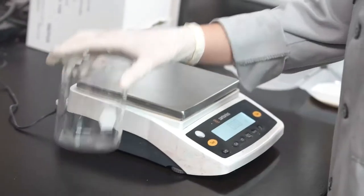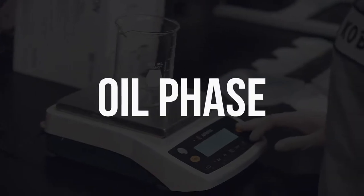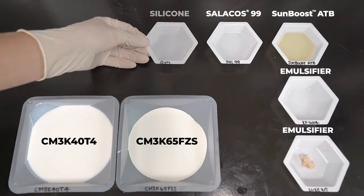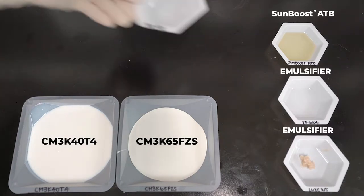Now we prepare the oil phase in the main beaker. We first weigh out the silicones and a low molecular weight ester which provides slip and spreadability.